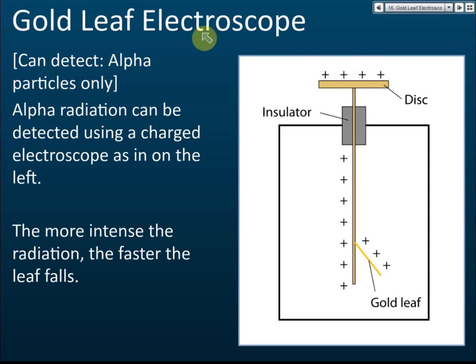The gold leaf electroscope — can any of you tell me its function other than detecting radioactivity? You have learned this in Form 3. So what is the use of a gold leaf electroscope? It is used to detect the presence of charge — not necessarily electrons, but any charge.